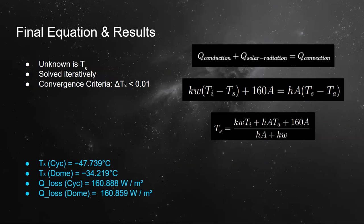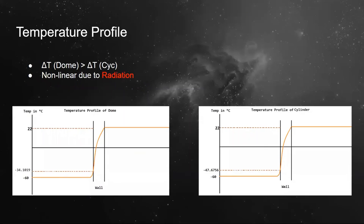Once we have found an ideal value for the temperature of the outer wall, we simply put that in the equation for the convection to find the heat loss through surroundings. Now let us see the temperature profile of dome and cylinder.